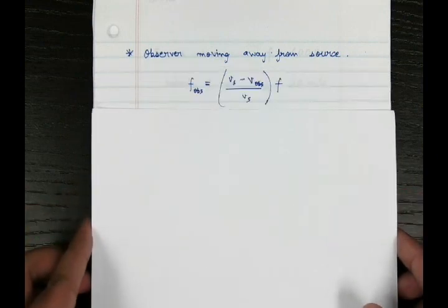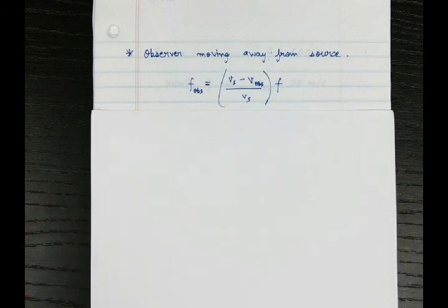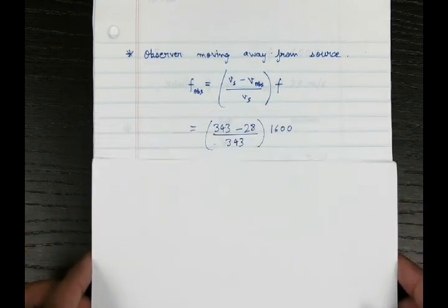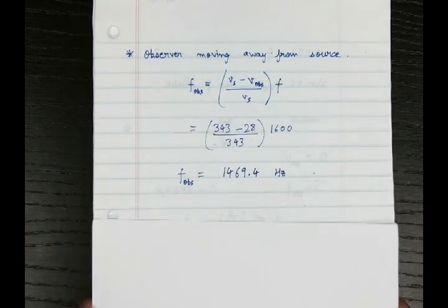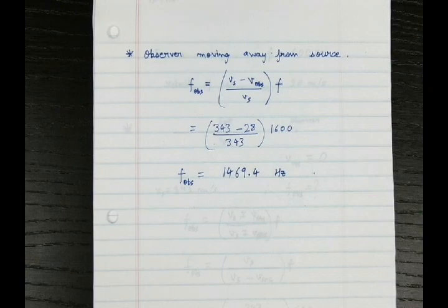For the next case, the observer is moving away from the source while the source is still at rest. The Doppler equation becomes: VS minus V-observer divided by VS, because they are moving away from each other — minus in the numerator and plus in the denominator — and since V-source is zero, only VS remains in the denominator. Plugging in the values, the final frequency is 1469.4 hertz, which is less than the actual frequency in the stationary case.